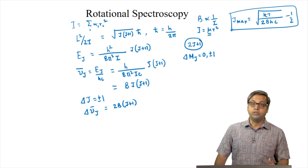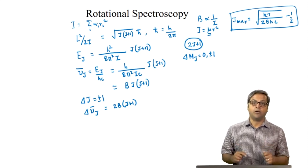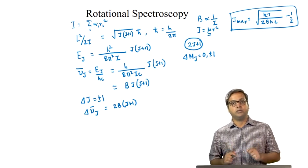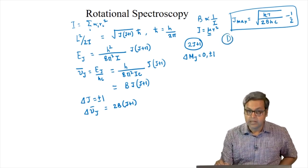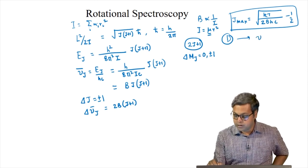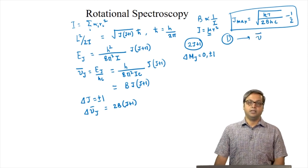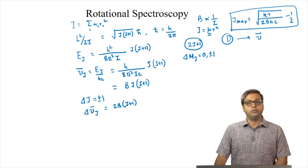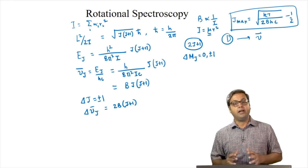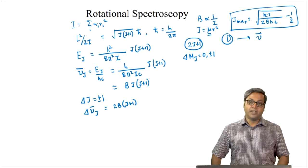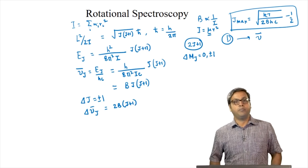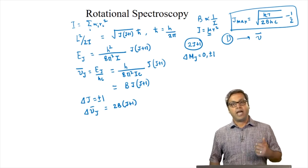We then moved on to non-rigid rotors and discussed the effect of centrifugal distortion. The distortion constant D provides a rough estimate of the vibrational frequency nu-bar. Finally, we looked into polyatomic molecules: the spherical rotor, the symmetric rotor (prolate and oblate), and the asymmetric rotor. In the next lecture, co-instructor Anirban Hasra will discuss rotational wave functions and selection rules.